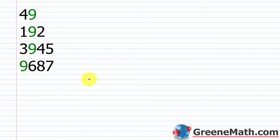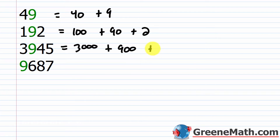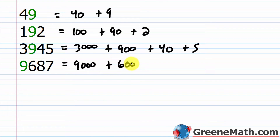We're going to look at four numbers: 49, 192, 3,945, and 9,687. We'll write each in expanded notation — covered in the next lesson — which shows the value of each digit fully. So 49 is 40 plus 9; 192 is 100 plus 90 plus 2; 3,945 is 3,000 plus 900 plus 40 plus 5; and 9,687 is 9,000 plus 600 plus 80 plus 7.